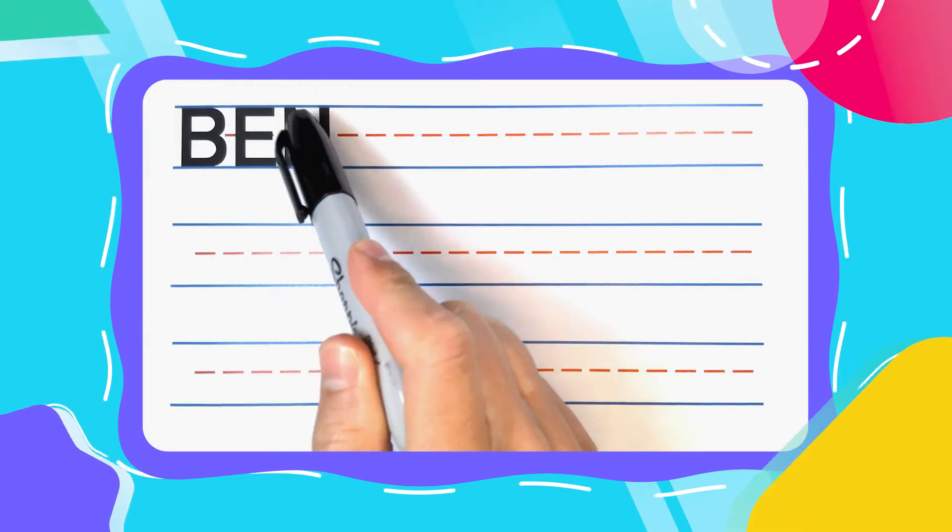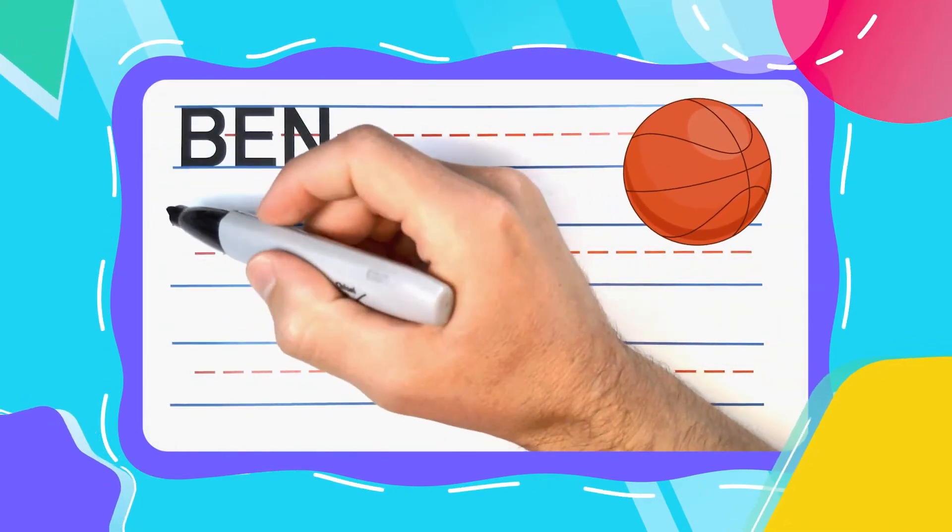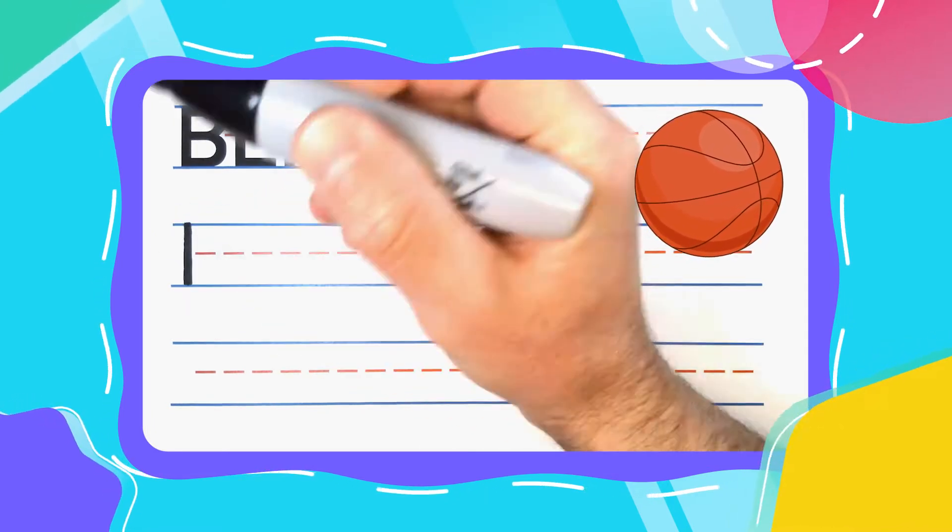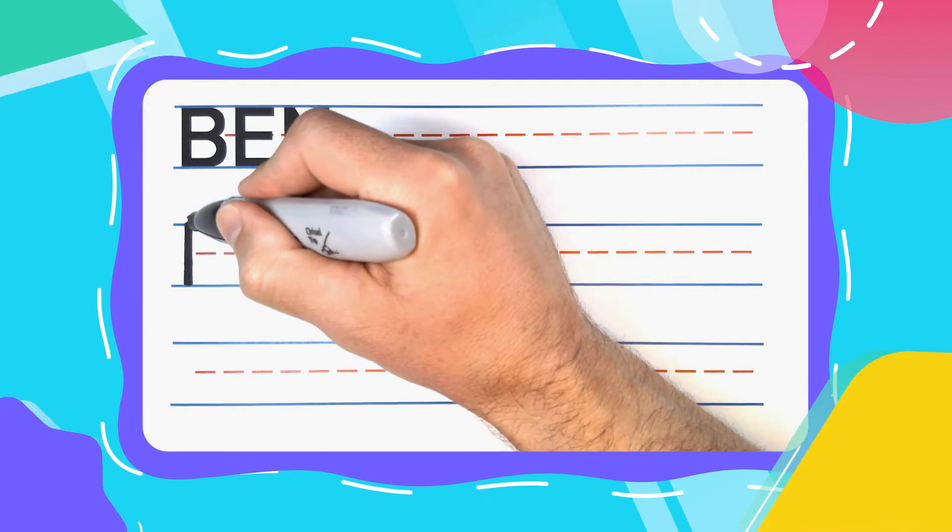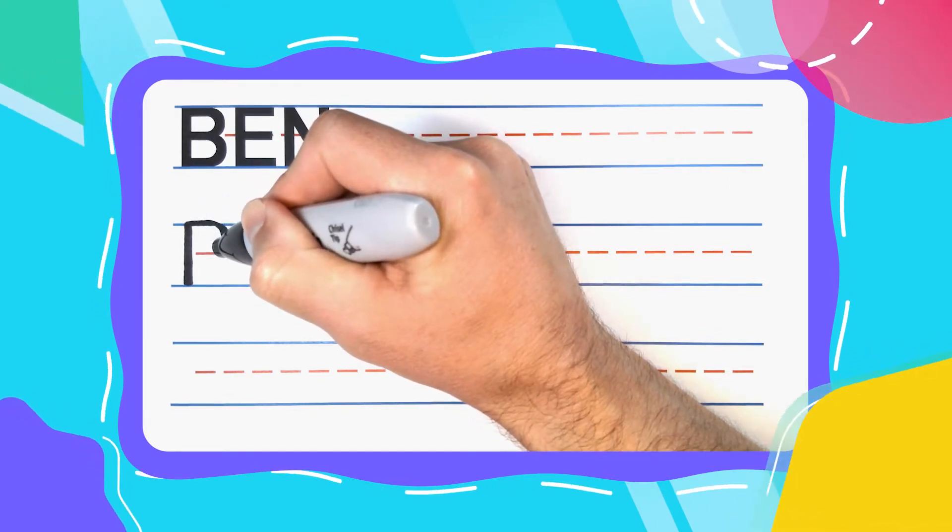E-N. Now let's get started with the bouncing B. Bouncing Bs start with a straight line down, then come back to the top and bounce out to the right curve. Then once you hit the middle line,